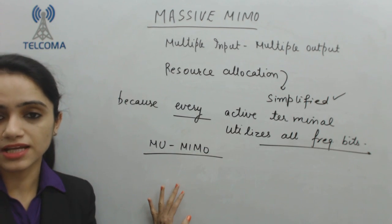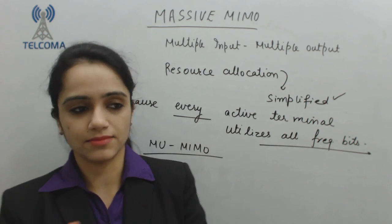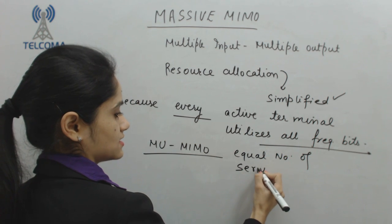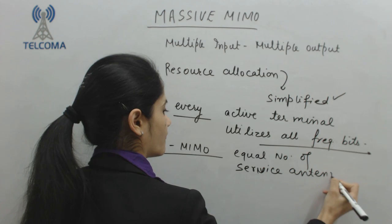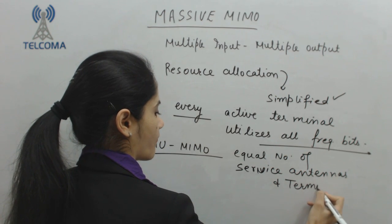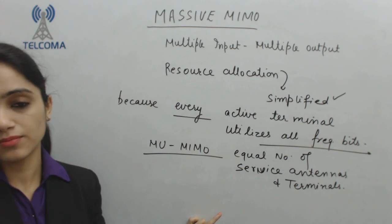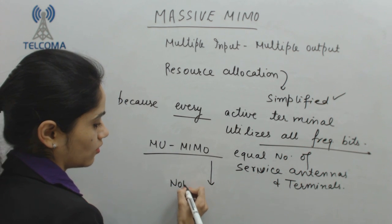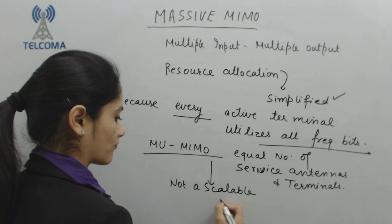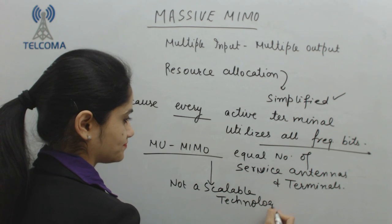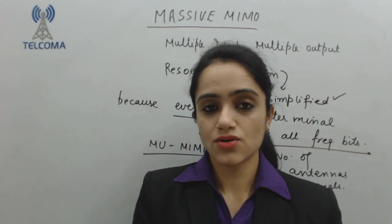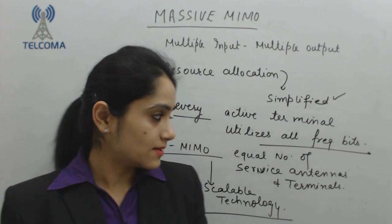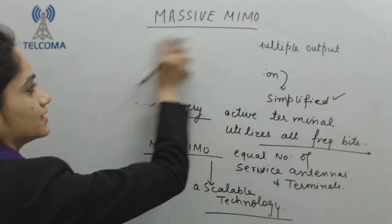In MU-MIMO — multi-user multiple input multiple output — we have an equal number of service antennas and terminals. Because there are equal numbers of service antennas and terminals, this is not a scalable technology.